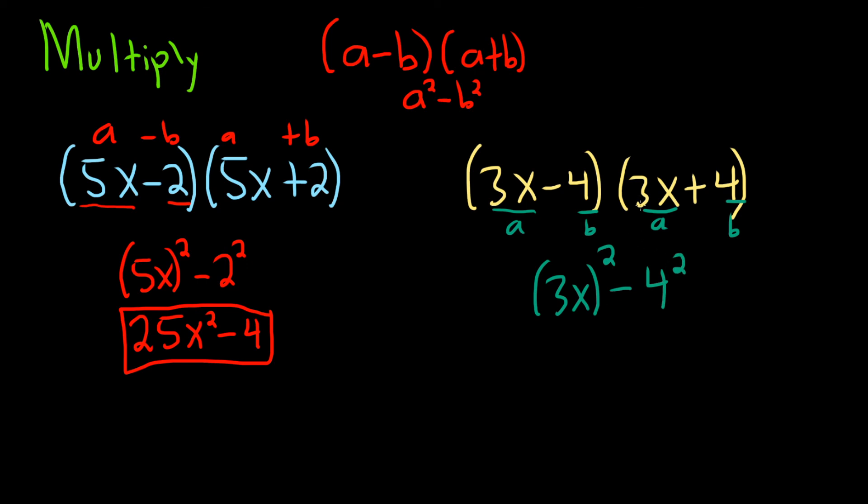When you square 3x, you square the 3 which gives you 9, and you square the x which gives you x². Minus 4 squared which is 16. That would be the final answer: 9x² - 16.